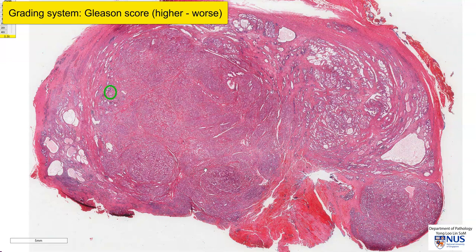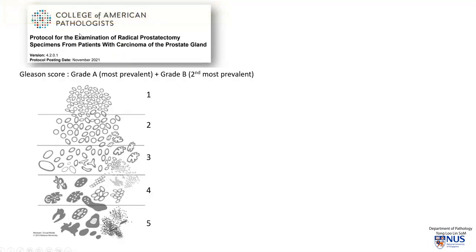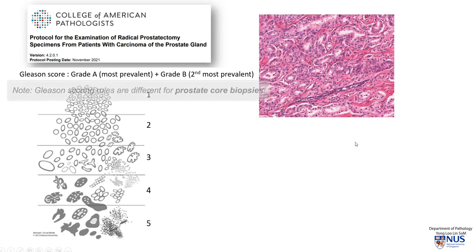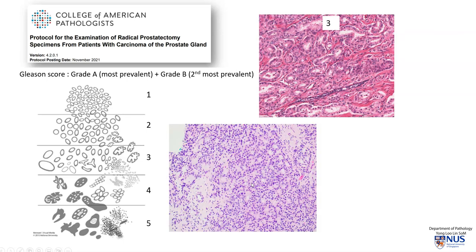Let's have a closer look at how we perform Gleason grading. This is an extract taken from the College of American Pathologists' online protocols for evaluation of radical prostatectomy specimens by pathologists. Grade A is the most prevalent area and grade B is the second most prevalent area. Looking at the case we have just seen, it is comprised mostly of discrete, very well-formed glands, and this would fall into grade 3 because the glands are discrete. In another case, instead of the glands being single and spaced apart, they are all sharing walls — many glandular openings and shared walls — and this falls into Gleason grade 4.